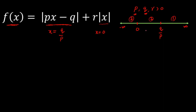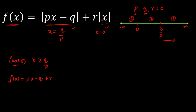I'll define the function in all three regions. Case one: x greater than or equal to q over p. In this region, both moduli are positive, so f of x equals (px minus q) plus rx. Differentiating, f'(x) equals p plus r. Since p and r are both positive, f'(x) is greater than zero — the function is increasing in this region.